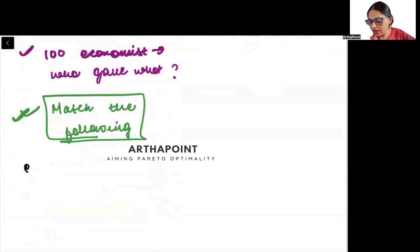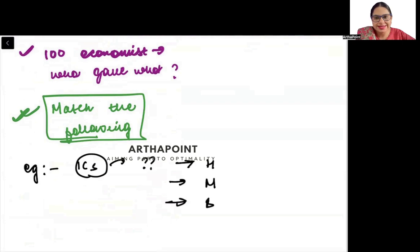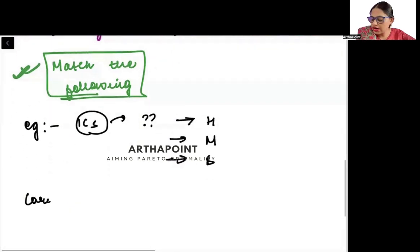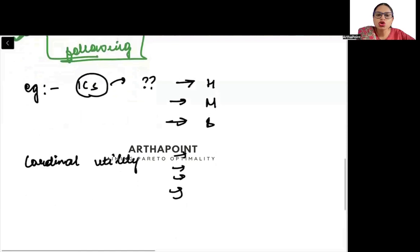Just for example, if I ask you that the concept of indifference curve was first given by, and I give you some options - Hicks, Marshall, Smith, Adam Smith and so on. If I ask you the cardinal utility concept was first given by, and then I give you four options - Marshall, Hicks, Allen again. So questions like this, who gave what, these questions you need to go ahead and remember.